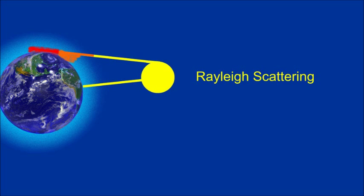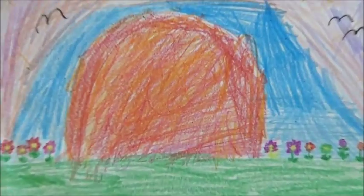At sunset, light must travel farther through the atmosphere. The color of the sun appears to change, first to orange and then to red, because more of the short wavelength blues and greens are now scattered, and only the longer wavelength reds and oranges are left to be seen.